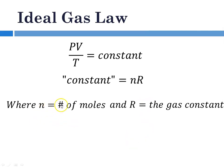So if we put that all together and substitute in nR for where it says constant, we get the ideal gas law, which is PV equals nRT. If you know the pressure, the volume, the temperature, and the number of moles, you can arrive at everything you need to know about a gas.